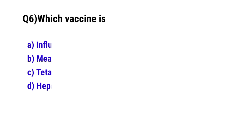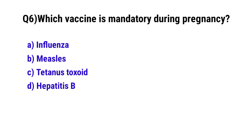Question No. 6: Which vaccine is mandatory during pregnancy? The correct option is C: Tetanus toxoid.